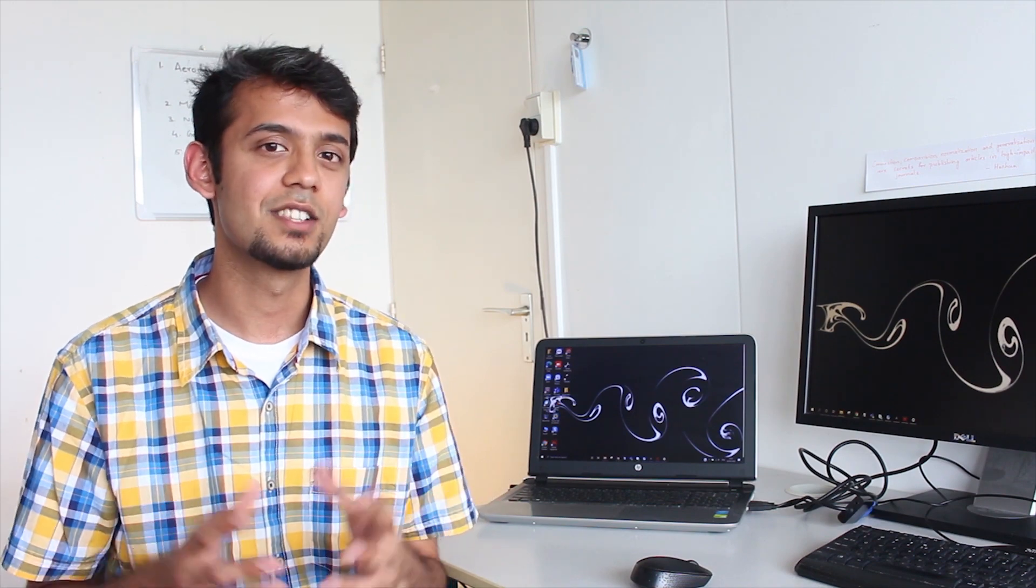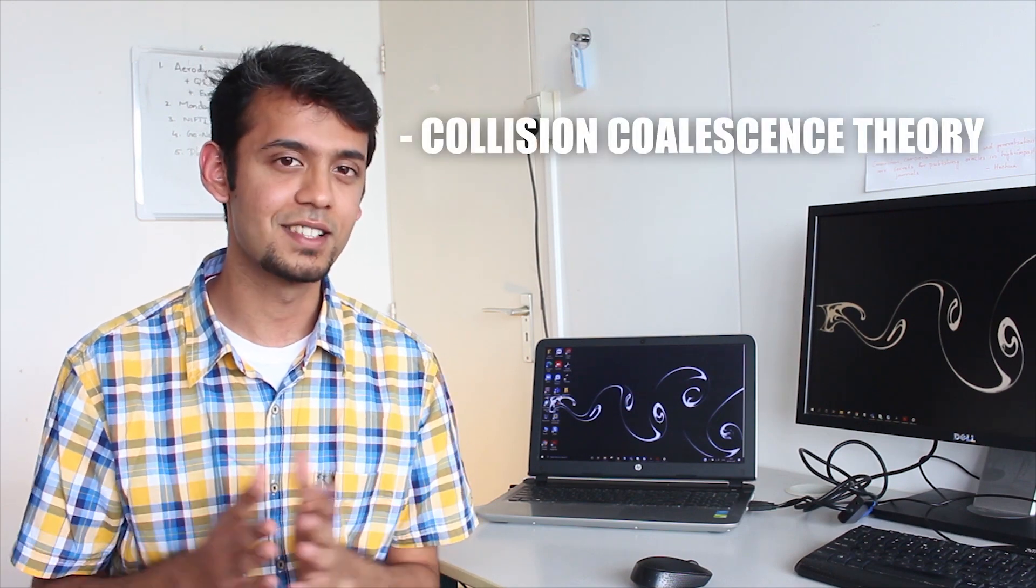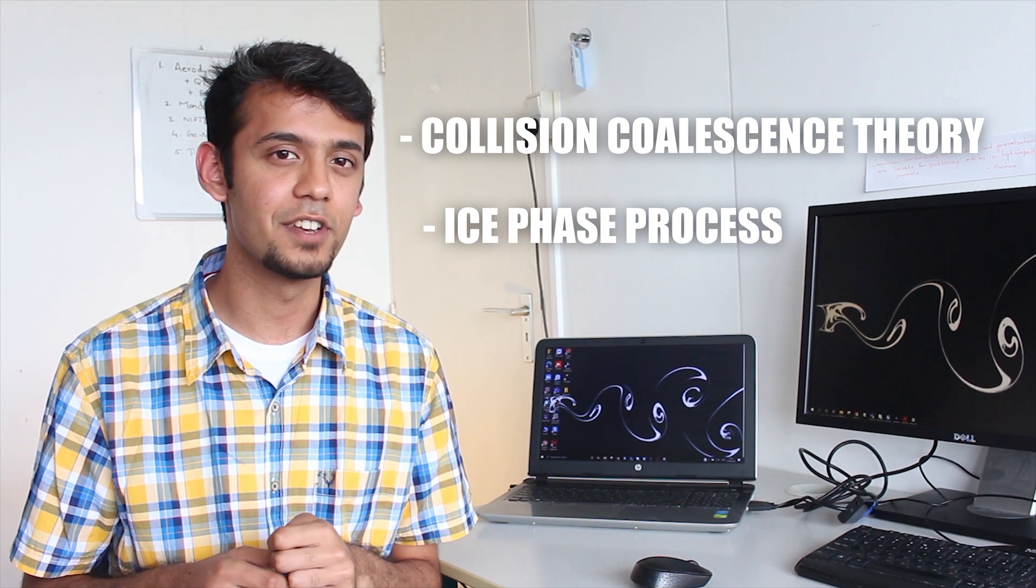There are many different theories as to how cloud droplets grow in size before falling as rain. Two of these theories are well accepted. One, the collision coalescence theory and two, the ice phase process.